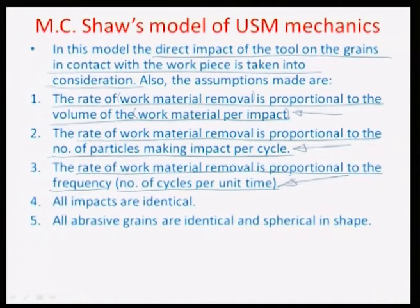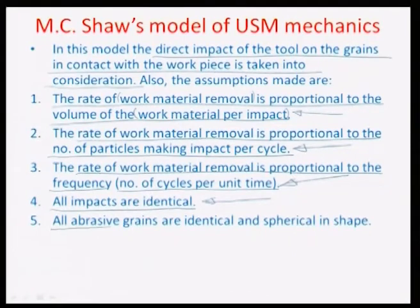All impacts are assumed to be identical — no non-idealized situations are considered. The idealized condition assumes a tool approaching the surface, grains trapped between tool and workpiece, cavitation or erosion removing the brittle-fractured material as the tool withdraws, and fresh abrasive grains arriving as the tool approaches again. Additionally, all abrasive grains are assumed to be identical and spherical in shape. These are the five assumptions of Shaw's model.